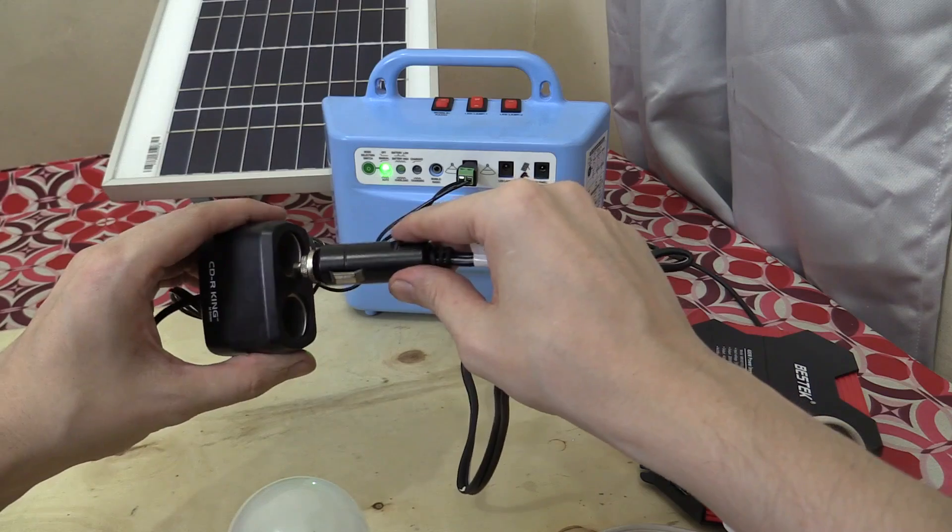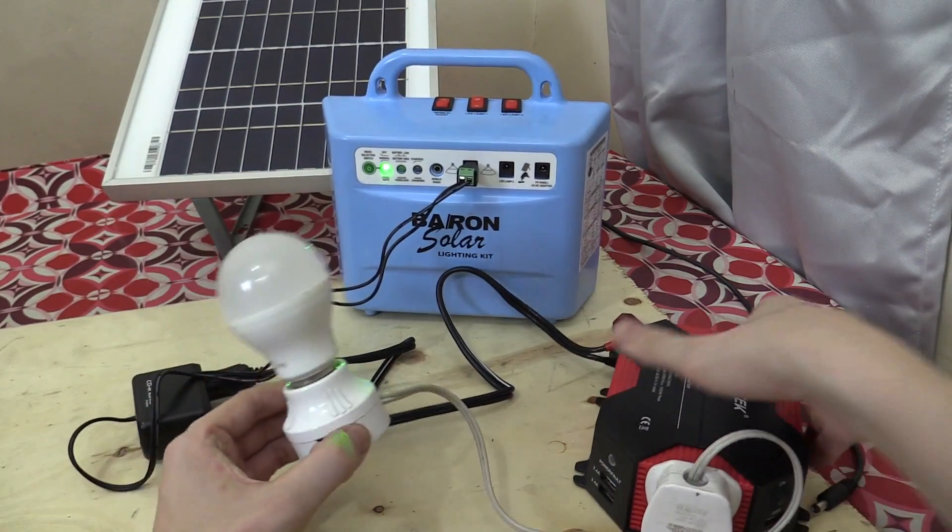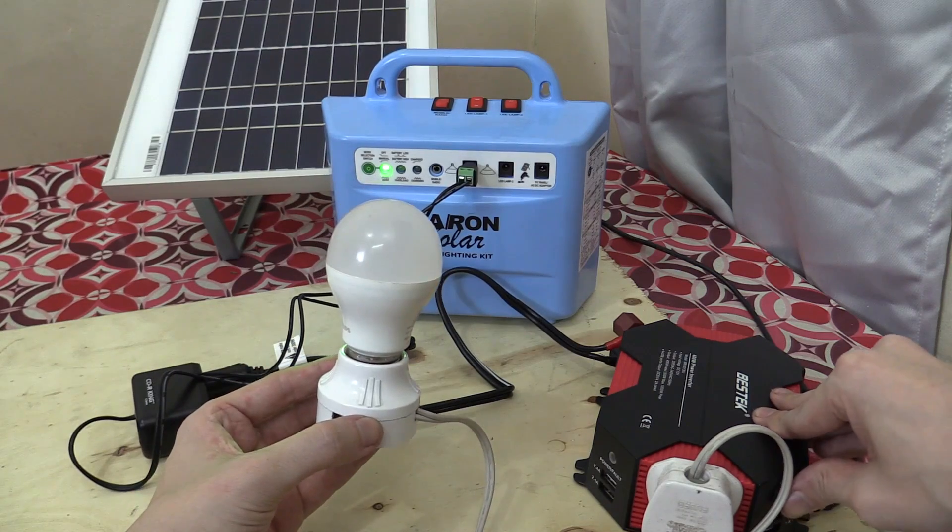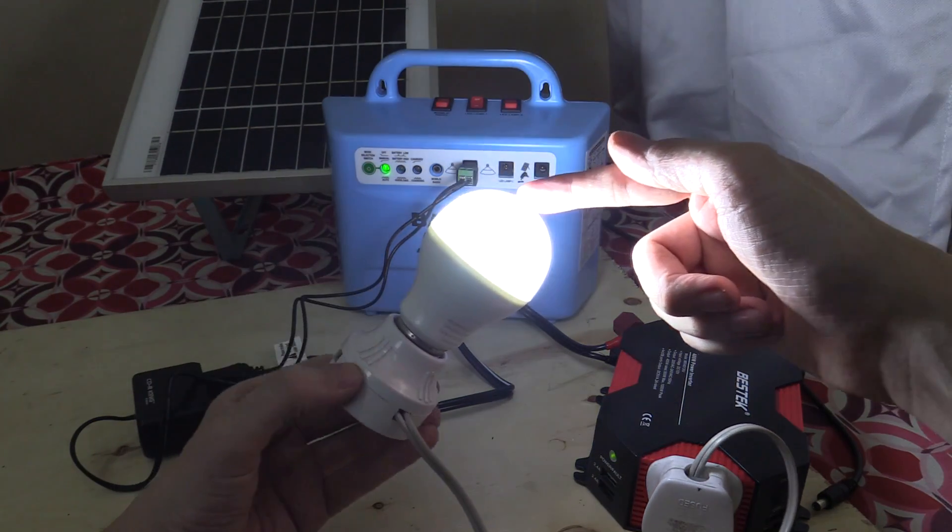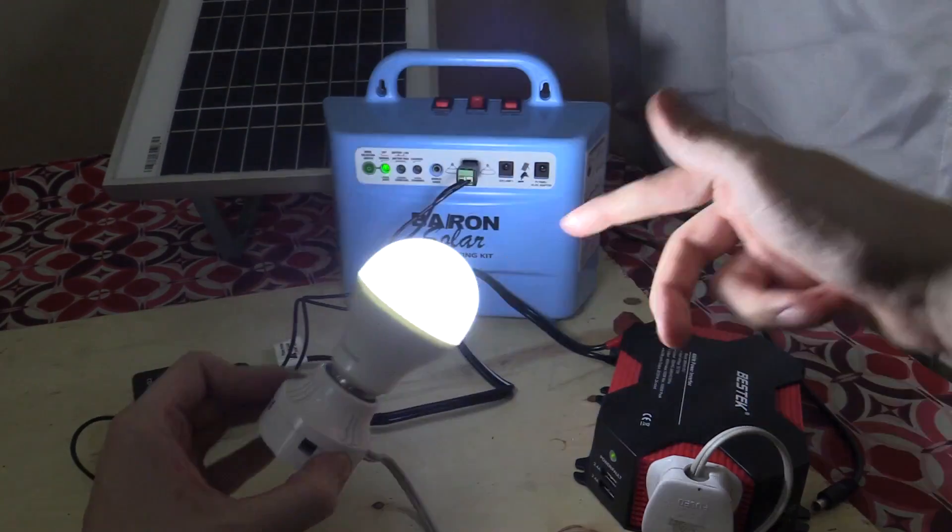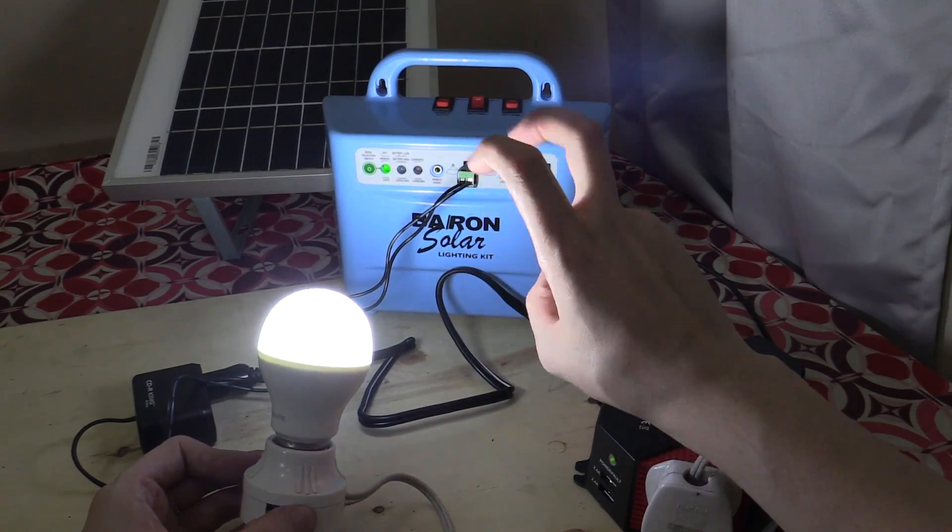So on the more extreme side of things, we can plug in a DC to AC inverter like this, and then we can run AC loads like this lamp. So there you go. This is a 220-volt Philips LED bulb, and we're running it through the inverter from the 12-volt socket here, or from the light bulb socket.